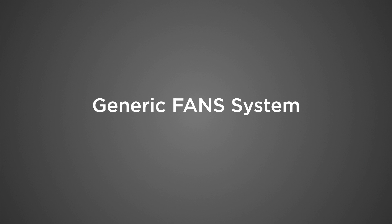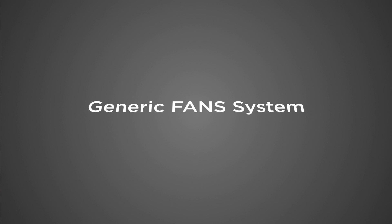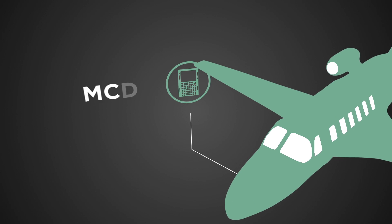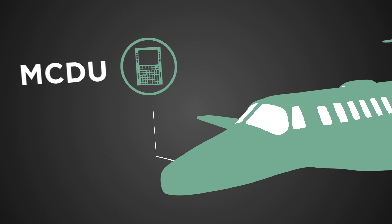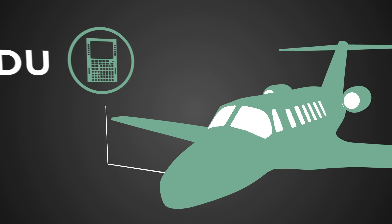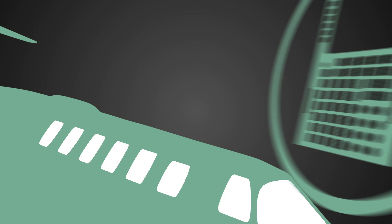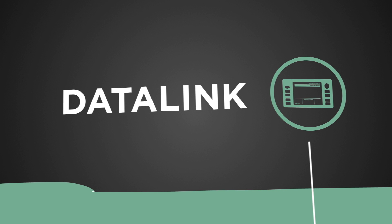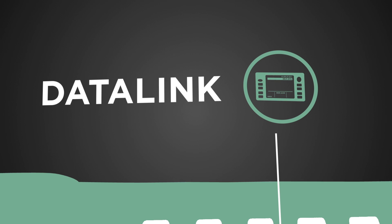Depending on your aircraft, there are a lot of variations in any FANS installation. However, there are also a lot of common themes. The first element is an MCDU. This CDU is capable of dialing your sat phone while also being an interface for your CPDLC text messages, and is tied to your data link system. The data link unit is the heart and soul of any FANS installation.